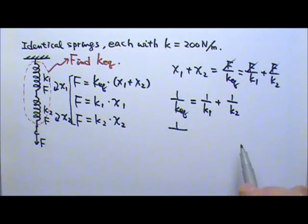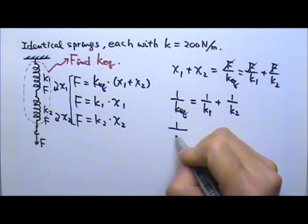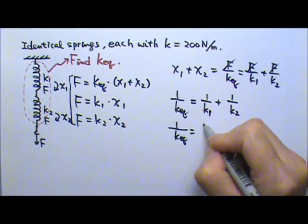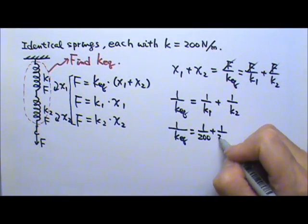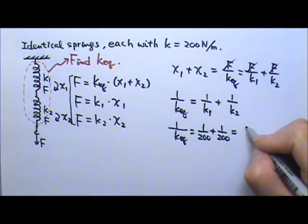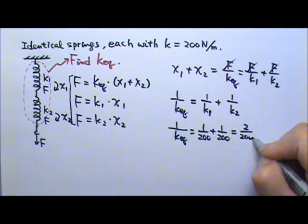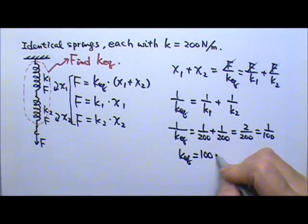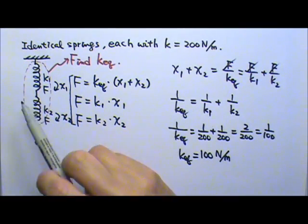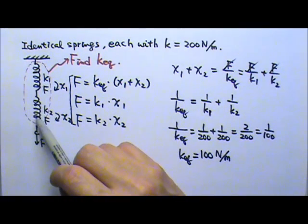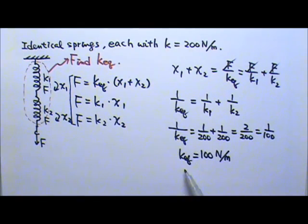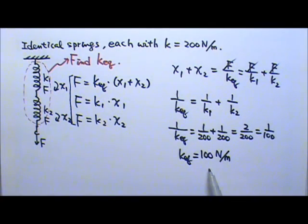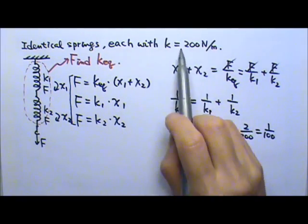If both K1 and K2 equal 200, then 1 over K equivalent equals 1 over 200 plus 1 over 200, which gives 2 over 200, or 1 over 100. So K equivalent equals 100 N/m. When we connect springs in series, we end up with an equivalent spring constant that's smaller than K1 and smaller than K2 — a spring that is not as stiff as the individual springs.